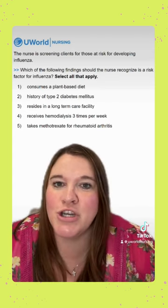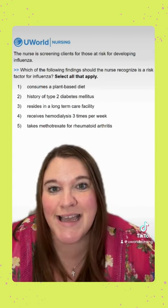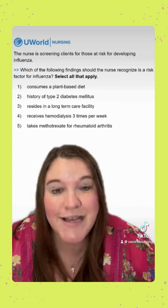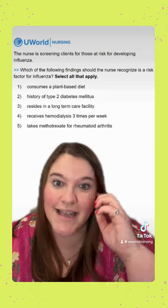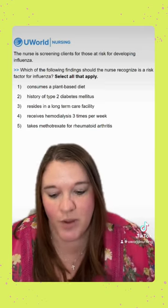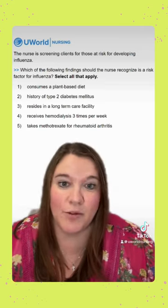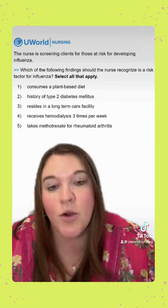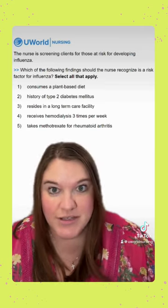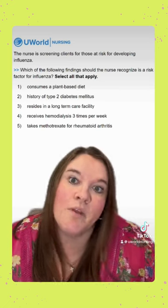Option two says a history of type 2 diabetes mellitus. This is a correct option. We know that with diabetes we have chronic hyperglycemia, which does increase our risk for infection.